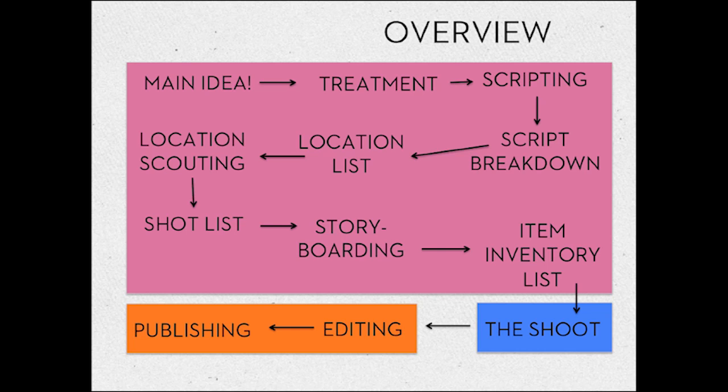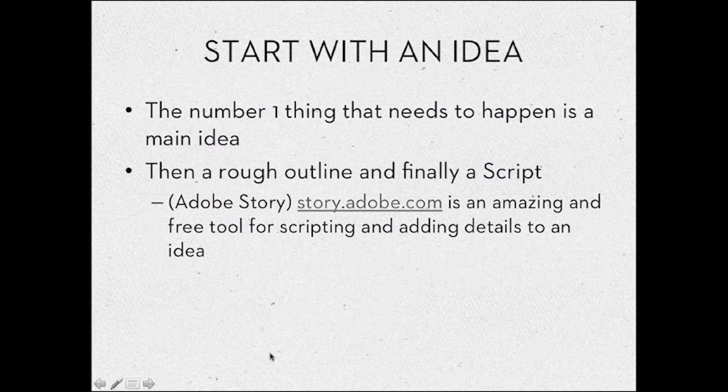This is the overview of the whole unit. First we start with the main idea, then we go into the treatment, then we go into scripting, then we go into script breakdown, location list, location scouting, shot list, storyboarding, and then item inventory list. After that, your outside work would be the shoot, then you would edit in class, and then you would publish it for the cinema premiere at the end of the year.